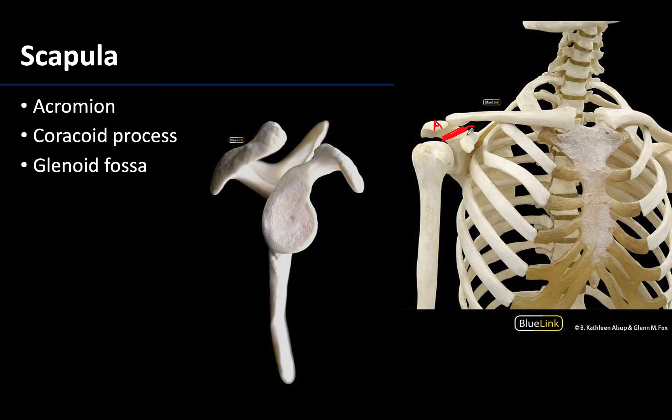Projecting anteriorly, as you can see here, is the coracoid process. This process is not nearly as large as the acromion, but it has lots of things attaching to it, including ligaments associated with both the acromioclavicular and shoulder joints.